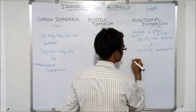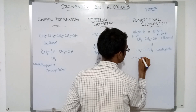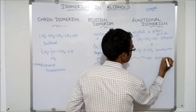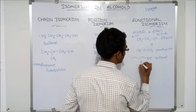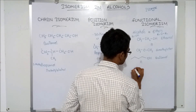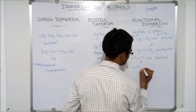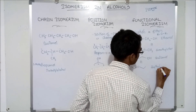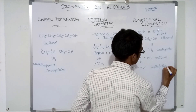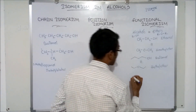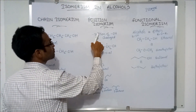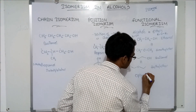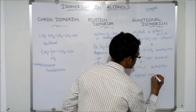See another example: butanol shows functional isomerism with diethyl ether. Apart from chain isomerism, position isomerism, and functional isomerism, alcohols also exhibit optical isomerism.